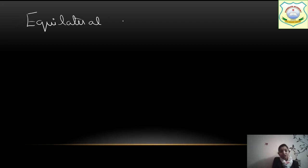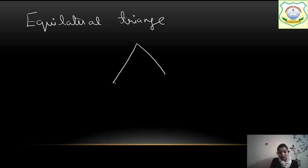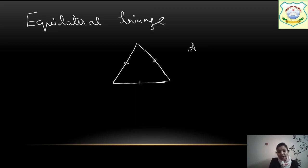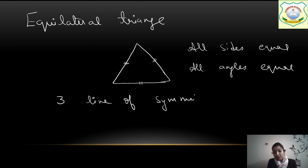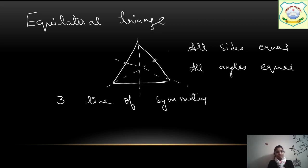Now I will explain one by one. First is equilateral triangle. Here we will draw equal sides — all three sides are equal. So you have to represent it like this showing that all 3 sides are equal, and write: all sides equal, all angles equal. And how many lines of symmetry? 3 lines of symmetry. Now draw the 3 lines of symmetry — line 1 goes from the middle, line 2 from the middle to the end point, and line 3. This is your equilateral triangle.